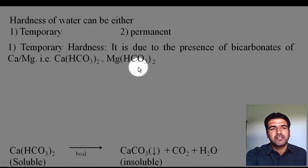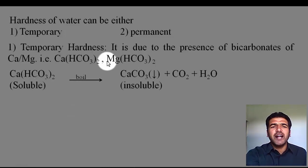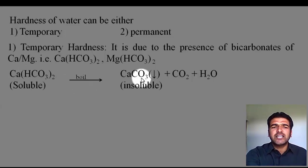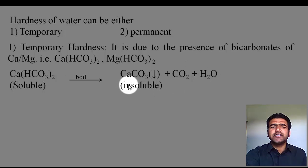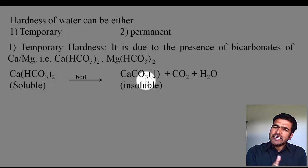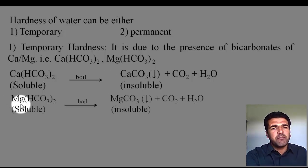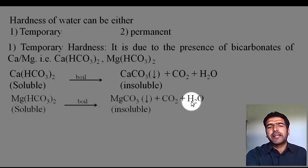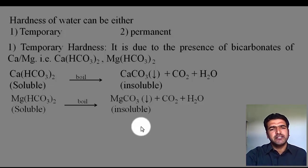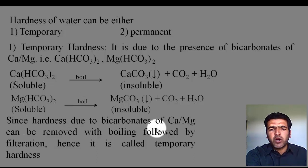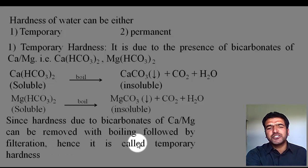Why is it called temporary hardness? Because if you boil the water, this hardness can be removed. For example, calcium bicarbonate is present in hard water — it is soluble — but once you boil it, it gets converted into calcium carbonate, which is deposited as a precipitate, and carbon dioxide escapes along with water. The insoluble calcium carbonate can then be removed by filtration. Similarly, magnesium bicarbonate when boiled produces magnesium carbonate and carbon dioxide; the magnesium carbonate is insoluble and may further convert to magnesium hydroxide, also insoluble. Both can be removed by filtration. So hardness due to bicarbonates of calcium and magnesium can be removed by boiling followed by filtration — hence it is called temporary hardness.